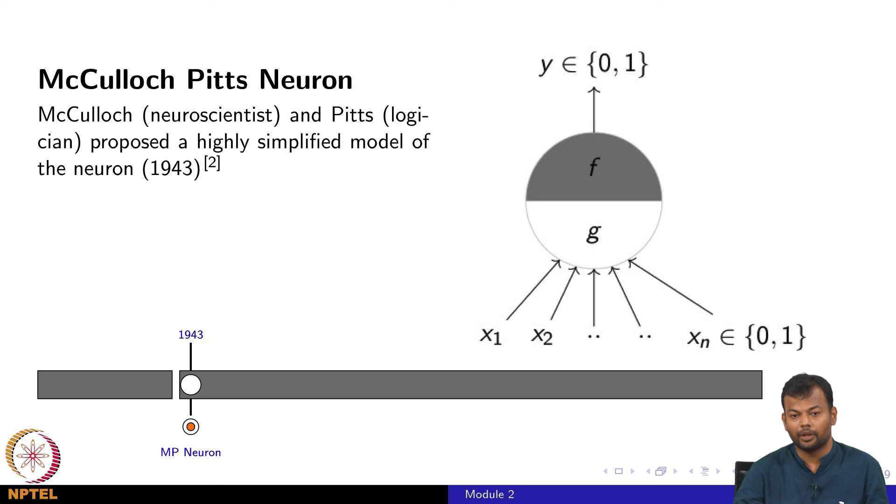Let us start with 1943, where there was a lot of interest in understanding how the human brain works and then coming up with a computational or mathematical model of that. McCulloch and Pitts, one of them was a neuroscientist and the other was a logician, came up with this extremely simplified model that a brain takes input from a lot of factors.